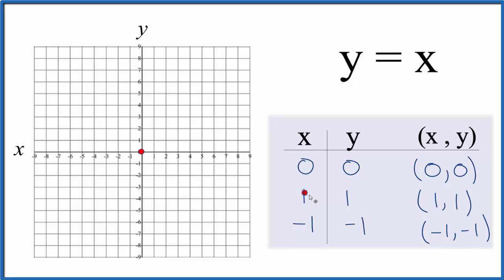How about x is 1, and then y is 1. And finally, we have x is negative 1, and y is negative 1. And you can see all of these points are in a line.